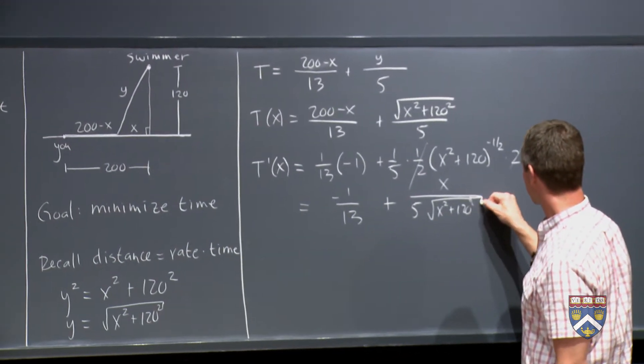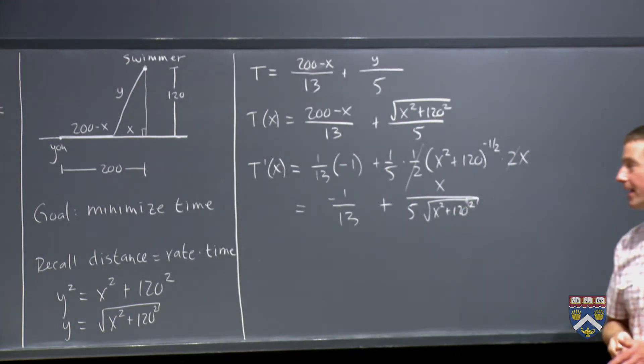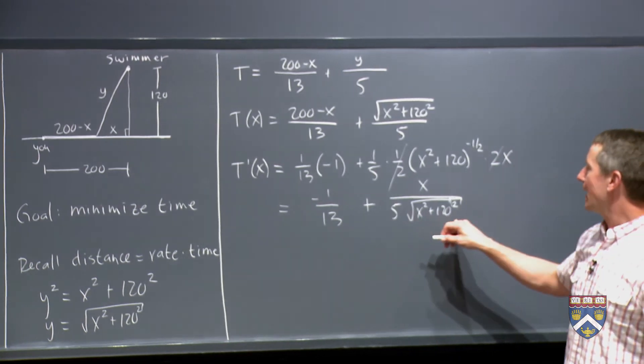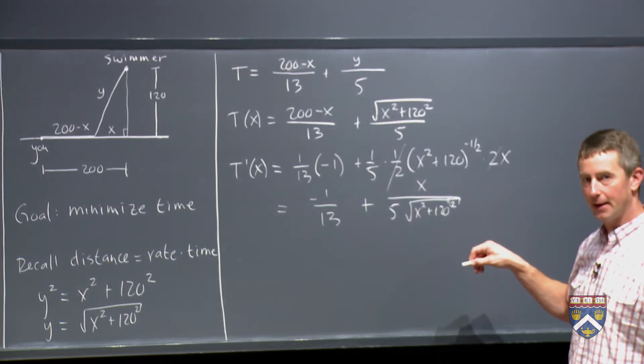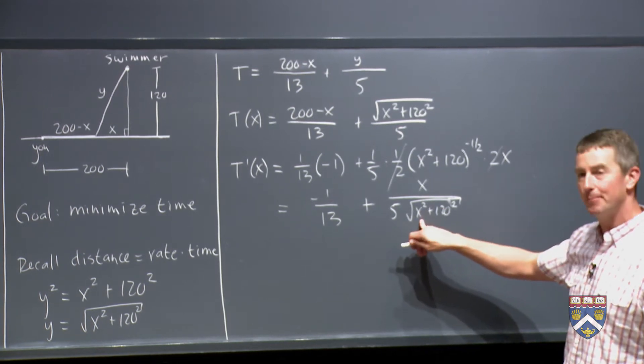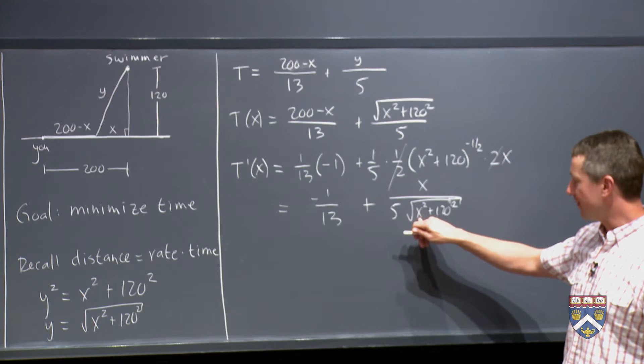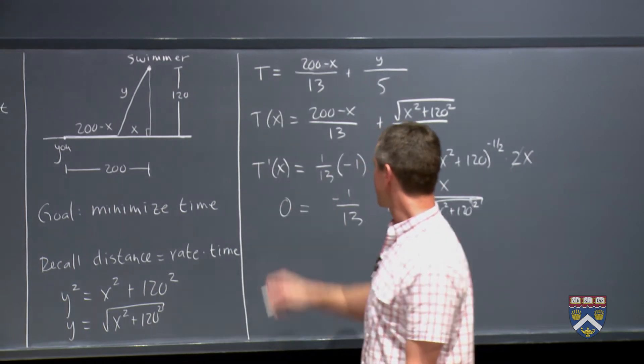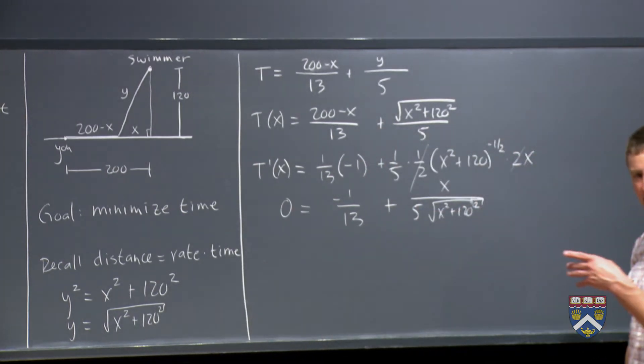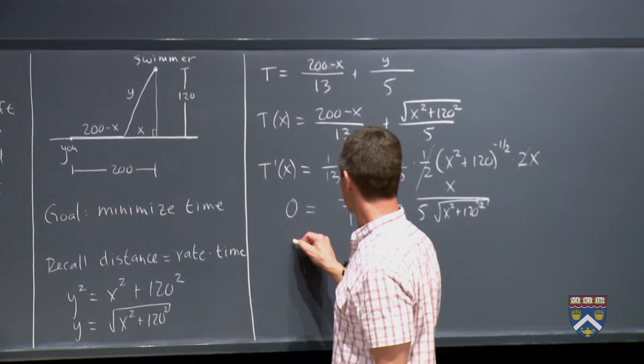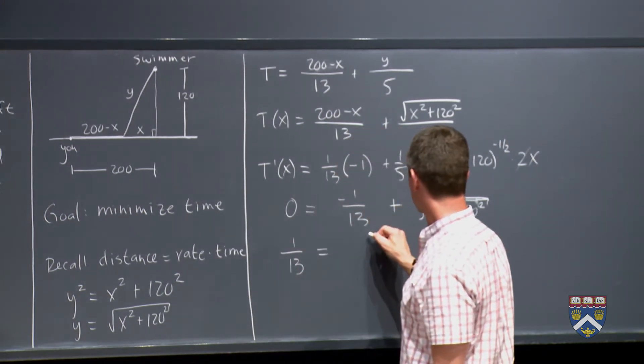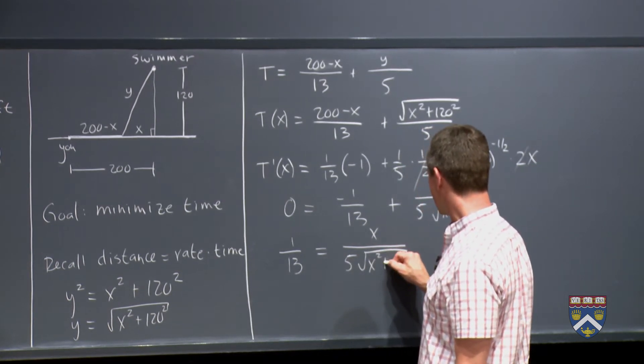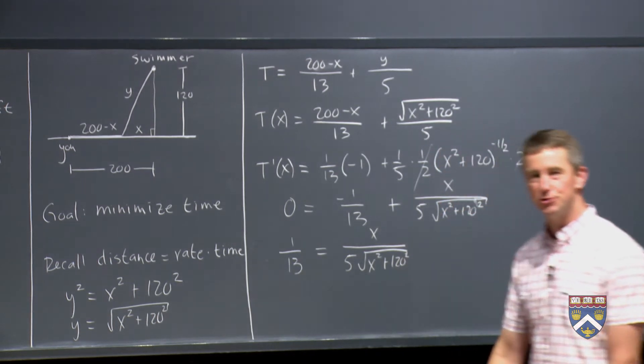So here we go. Here's our function, our derivative. We've got x's in the denominator, so we should be worried about this derivative being undefined. Is there any value of x that we can plug in to make this a zero in the denominator? No, there isn't because x squared can't be negative. And so there's no way that I can add this to a positive number and get a zero in the denominator. So all we have to do is set this equal to zero.